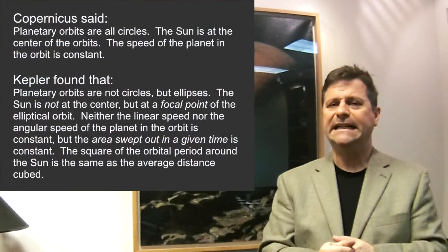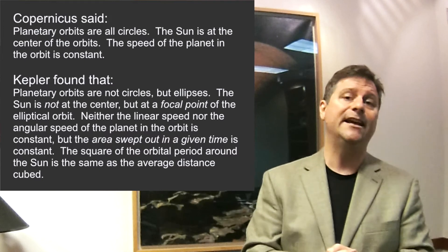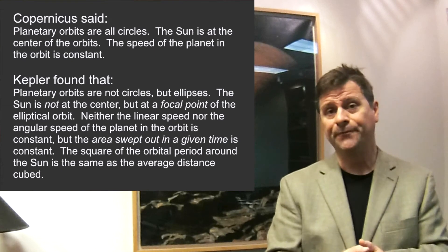Funny thing is, in 1609, after publishing this, Johannes Kepler learned about a young man named Galileo Galilei, and he sent a copy of his Astronomia Nova to him, and Galileo completely ignored it. Wonder what would have happened if he didn't.